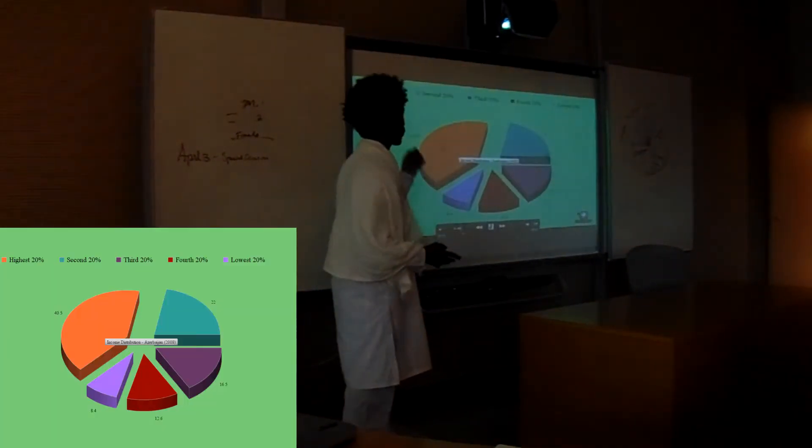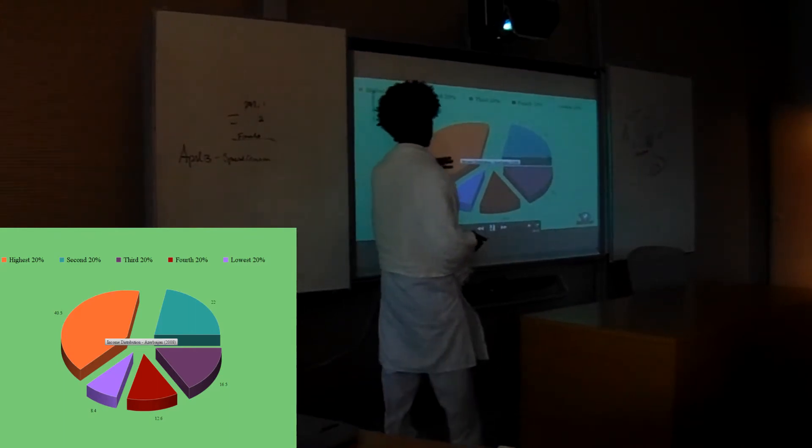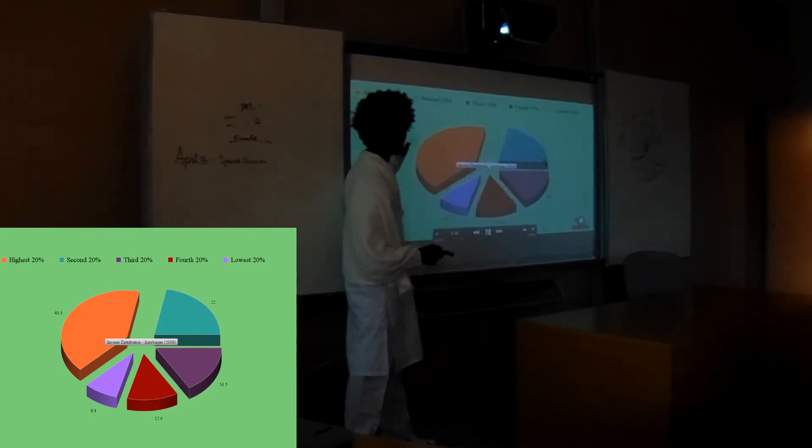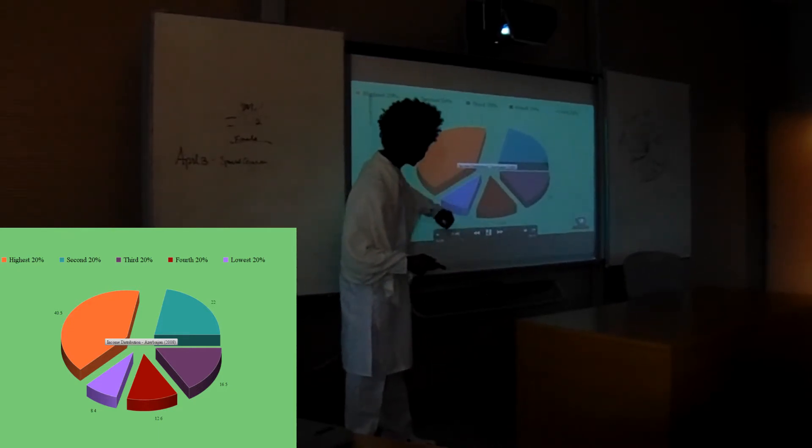Let's look at some facts about inequality in Azerbaijan. This is what the income distribution in Azerbaijan looks like by 2008: 40.5 for the highest 20%, 22, 16.5, 12.6,